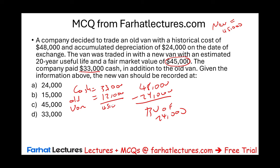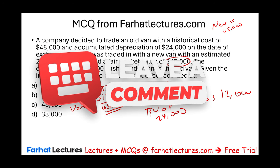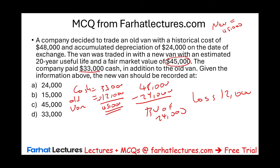The old van's fair market value is twelve thousand, but the book value is twenty-four thousand, so there is a loss of twelve thousand. The question asks: at what value should the new van be recorded? The new van is recorded at its fair market value of forty-five thousand, because that is what was given up in fair market value terms. We assume the transaction has commercial substance; however, even if it did not, we would still recognize the loss.